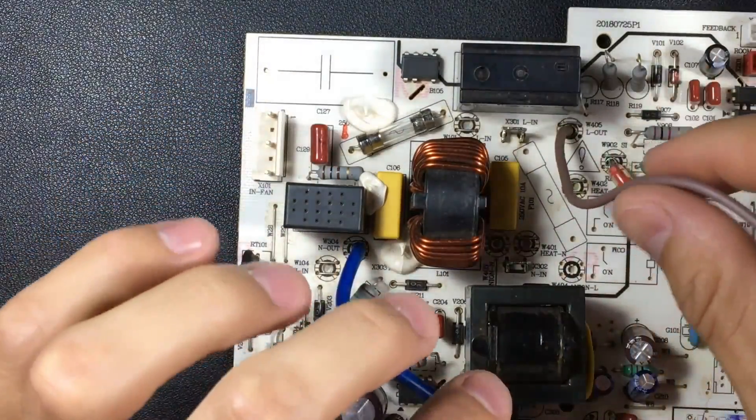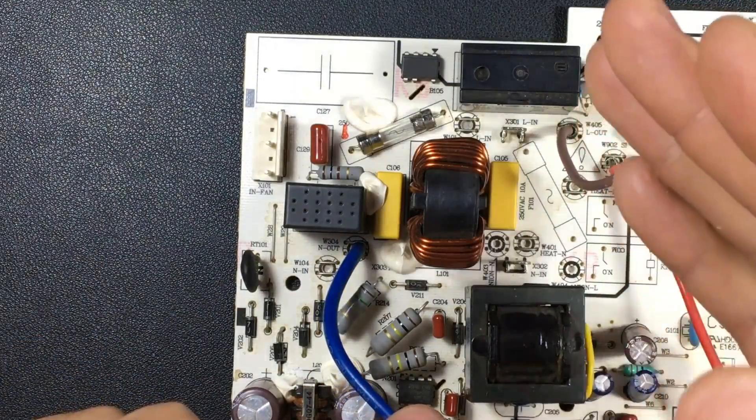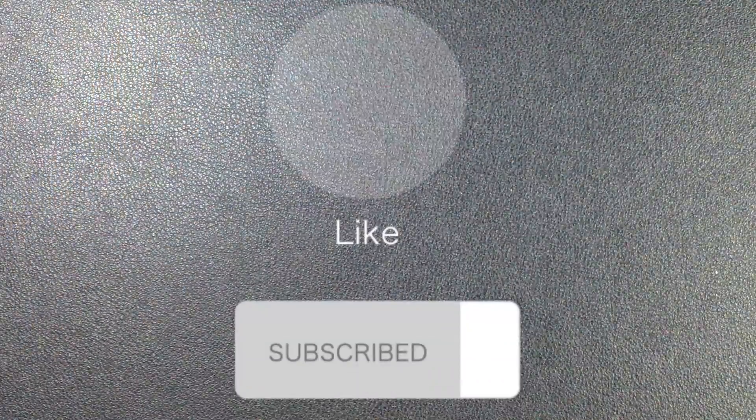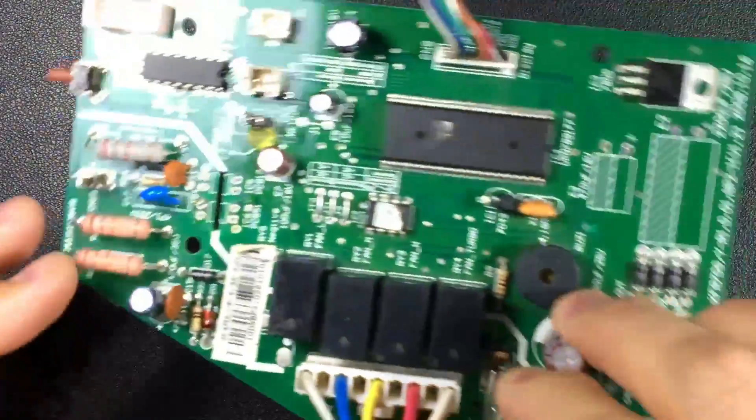We will start from where the electricity enters, that is from where the line enters and from where the neutral enters in an electronic board. We will see it in the following electronic board of a conventional equipment.